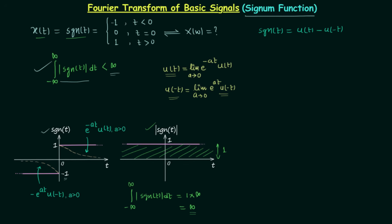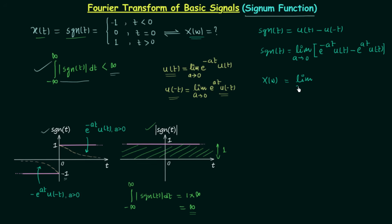Substituting these values, the signum function equals the limit as a tends to 0 of [e^(−at)·u(t) − e^(at)·u(−t)]. Applying the Fourier transform to both sides, and using the known result that the Fourier transform of e^(−at)·u(t) equals 1/(a + jω) and the Fourier transform of e^(at)·u(−t) equals 1/(a − jω), we get X(ω) equals the limit as a tends to 0 of [1/(a + jω) − 1/(a − jω)].